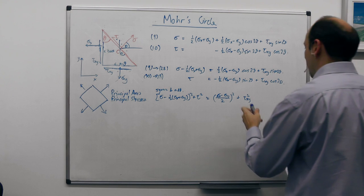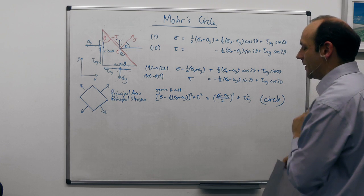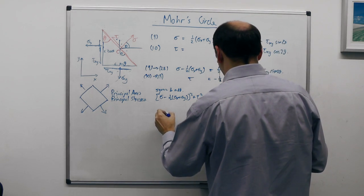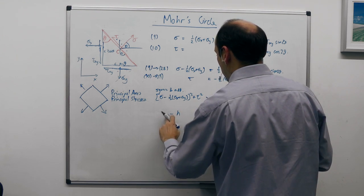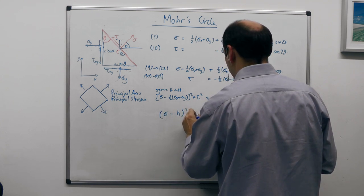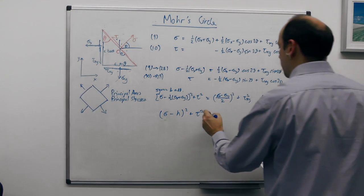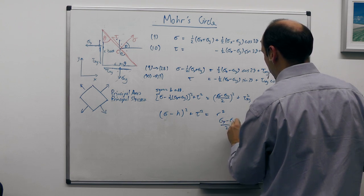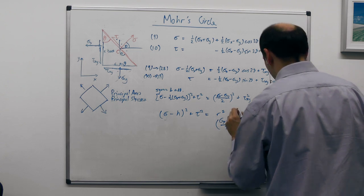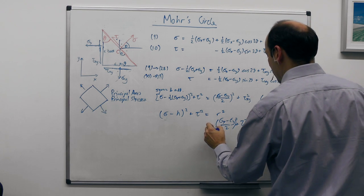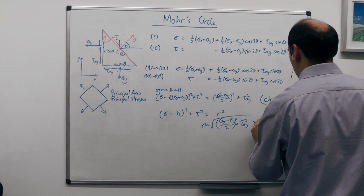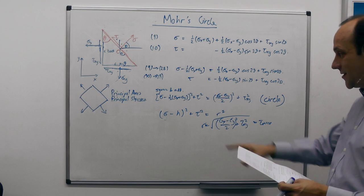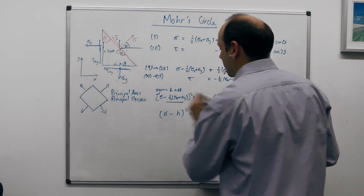Now this is the equation of a circle — in the form (sigma - h)² + τ² = R², where the axes are sigma and τ, and the radius equals the square root of ((sigma_x - sigma_y)/2)² + τ_xy². That radius is equal to τ_max from equation 24. So we have a circle with radius τ_max centred at the average of the two normal stresses.